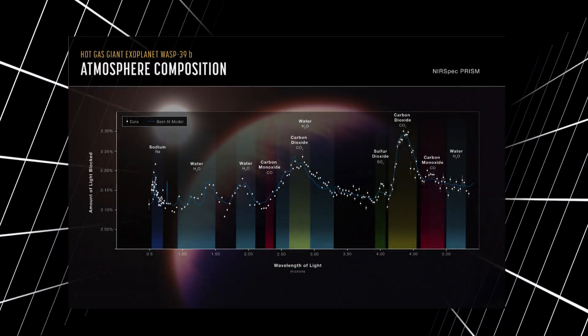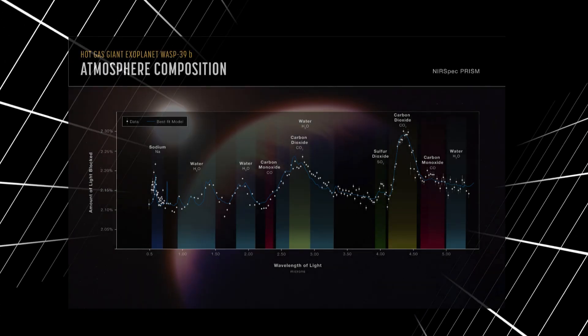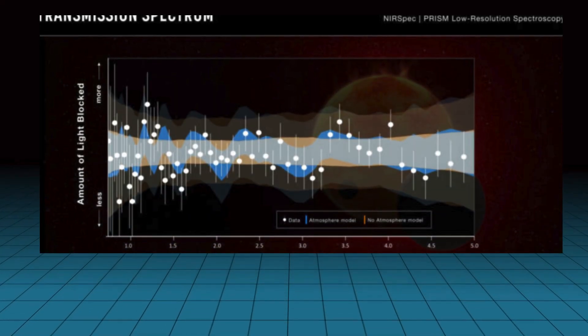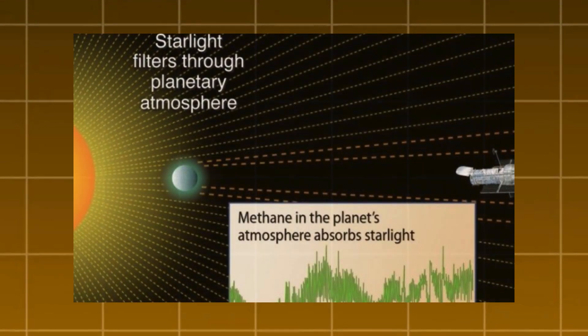These repetitions indicate underlying mechanisms—tidal heating, radioactive decay, or deep reservoirs—keeping planets active far longer than expected.